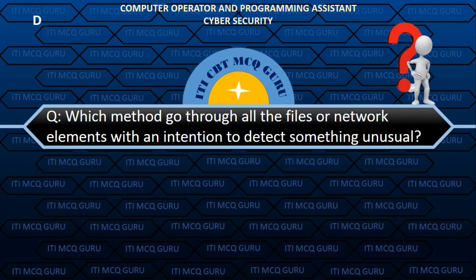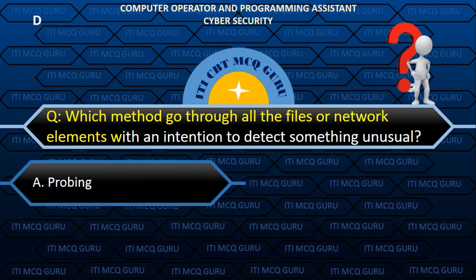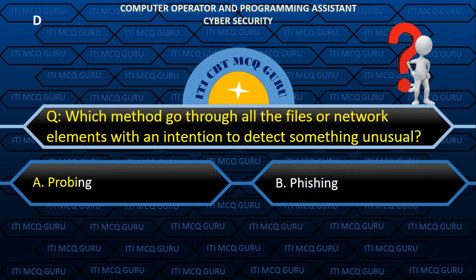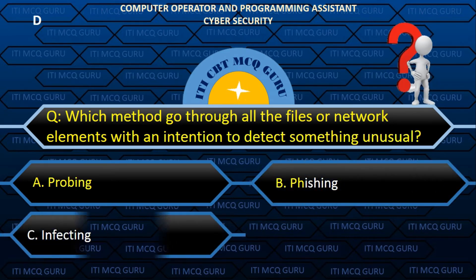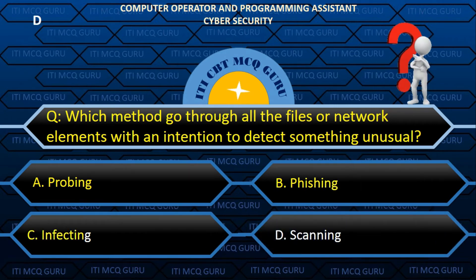Which method goes through all the files or network elements with an intention to detect something unusual? Answer: D. Scanning.